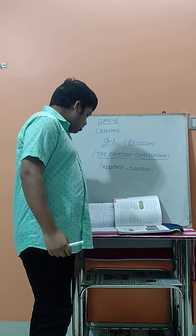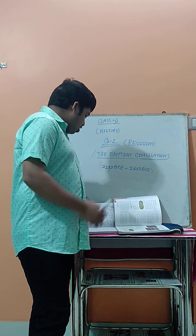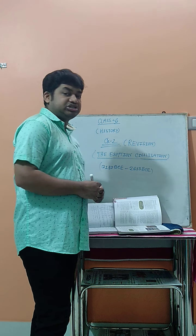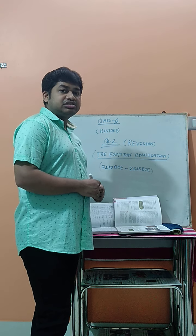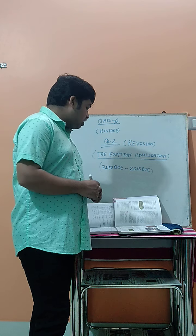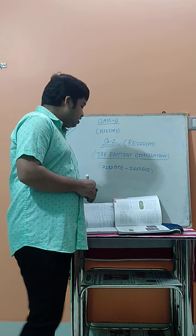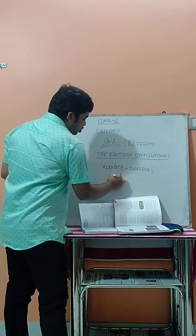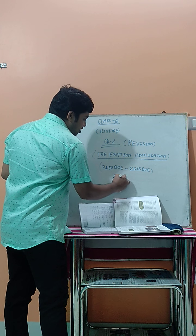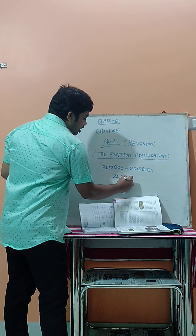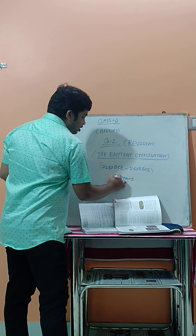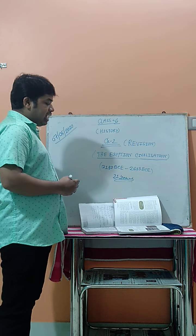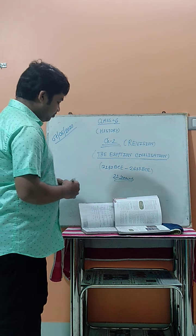The next question is: who was the longest female ruler of the Egyptian civilization? Hatshepsut was the longest female ruler of the Egyptian civilization. She ruled for almost 21 years.